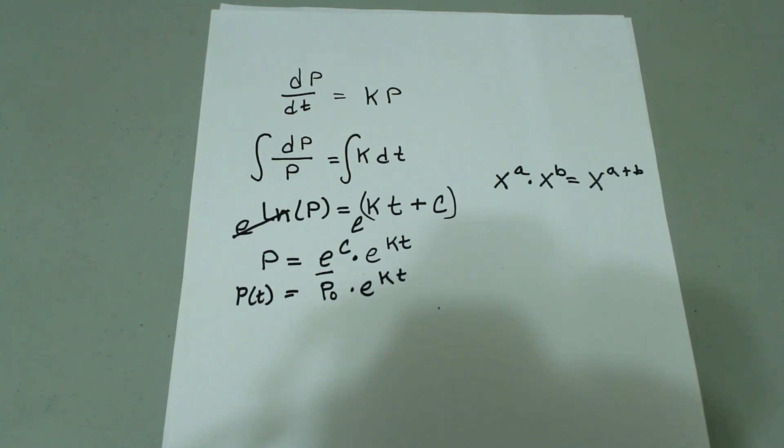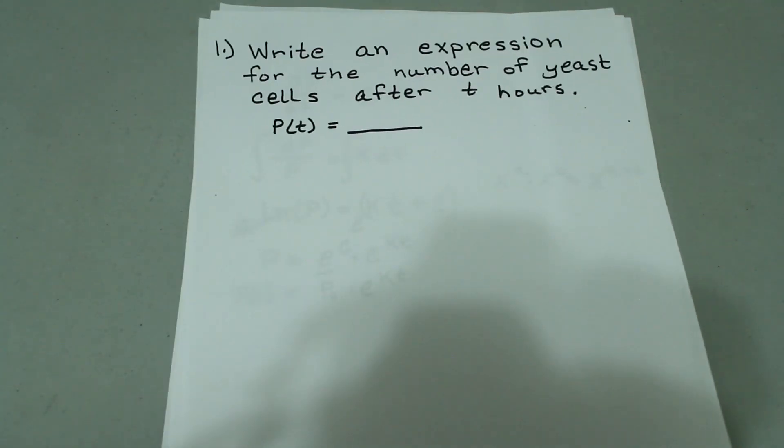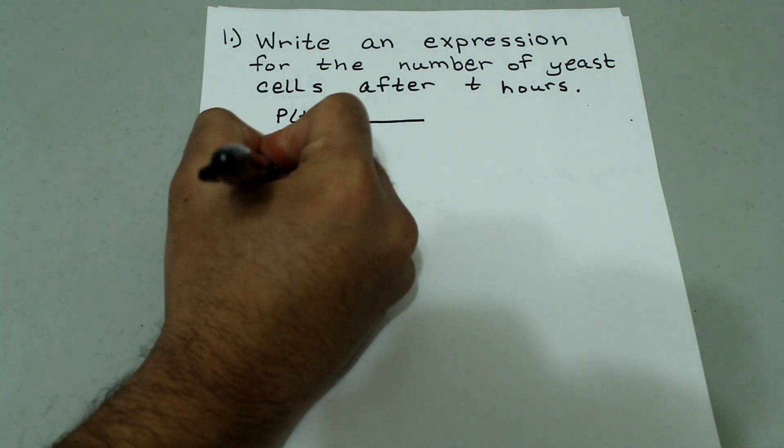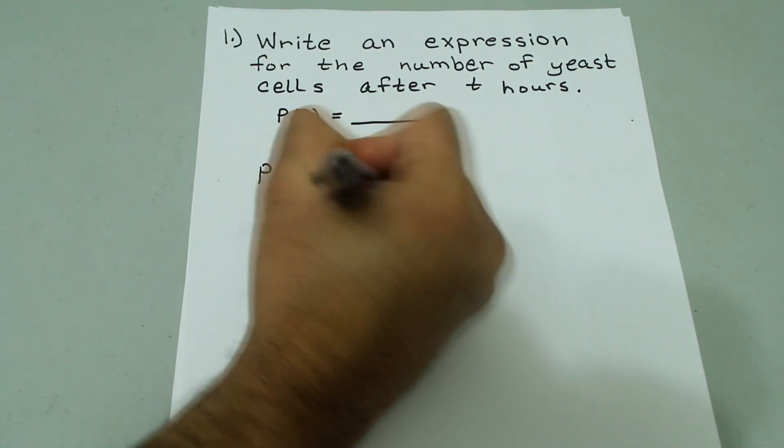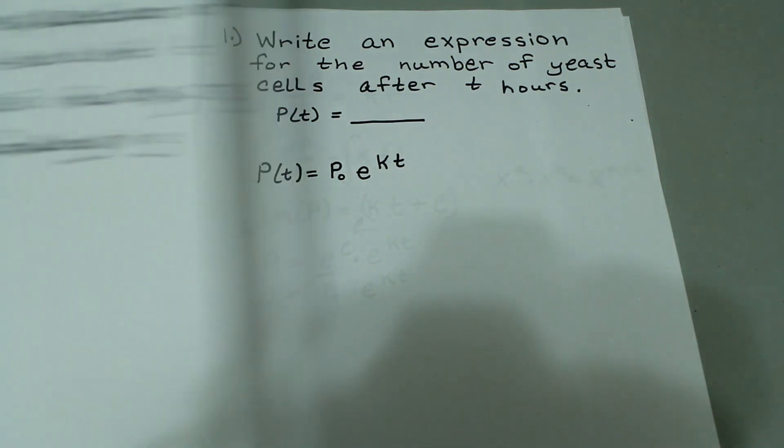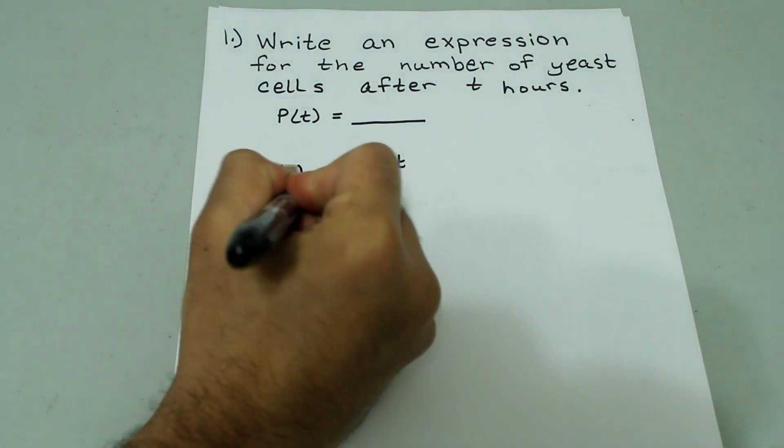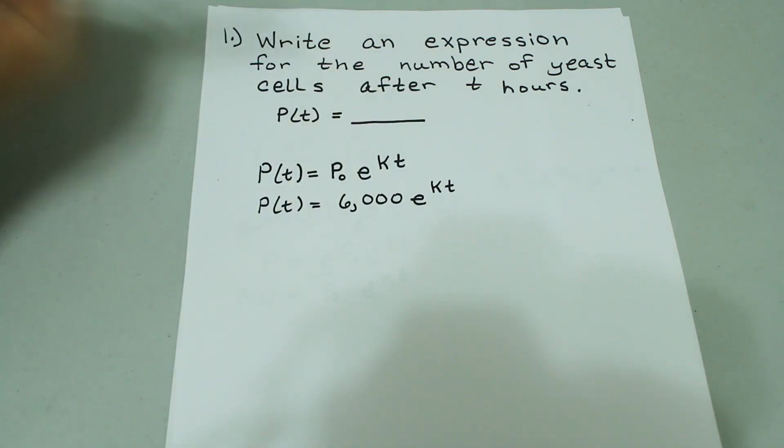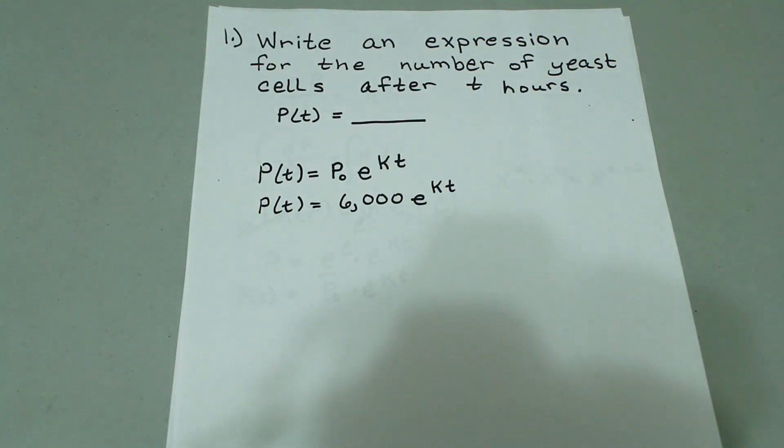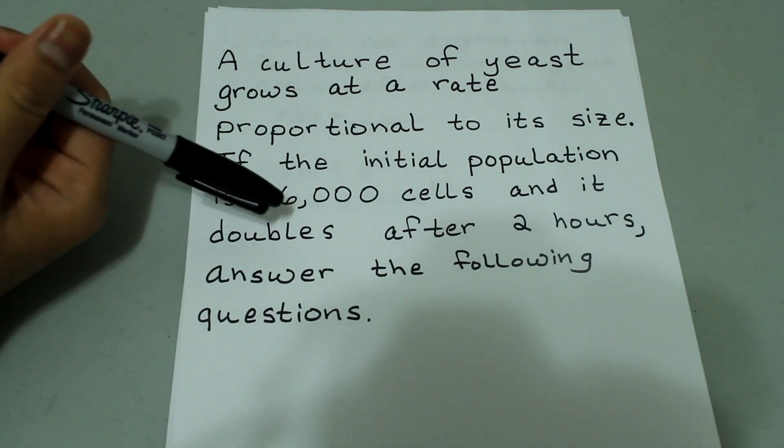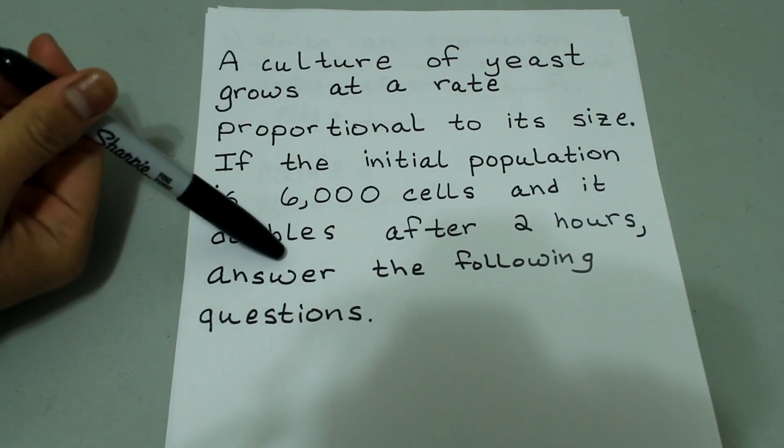Now if we go back to our question, where we have this: write an expression for the number of cells after t hours. We already know that the form looks like this: P(t) equals P naught e to the kt. We know our P naught because it tells us that the initial population is 6,000 cells. So we can say that P(t) equals 6,000 times e to the kt. Now the only thing left to find is the value of k.